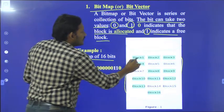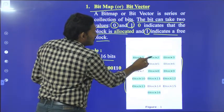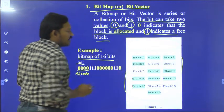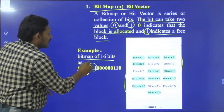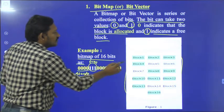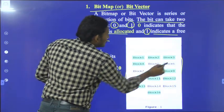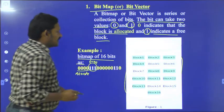See, the first 4 blocks: Block 1, block 2, block 3, block 4, they are already filled. So the next 3 bits, they are free. See here: 5, 6, 7, these 3 are free.